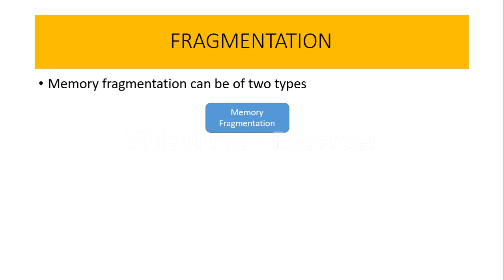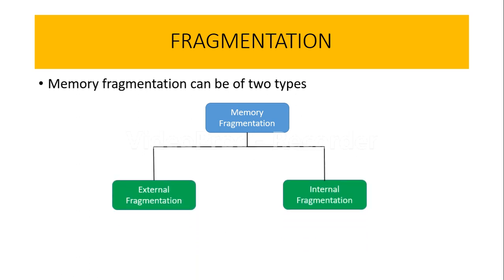If you see the different types of fragmentation, we can have two different types. The first one being external fragmentation and the second one is internal fragmentation. External fragmentation is the wastage of memory between the partitions, and because this memory is scattered in a number of discontinuous areas, we call it external fragmentation.